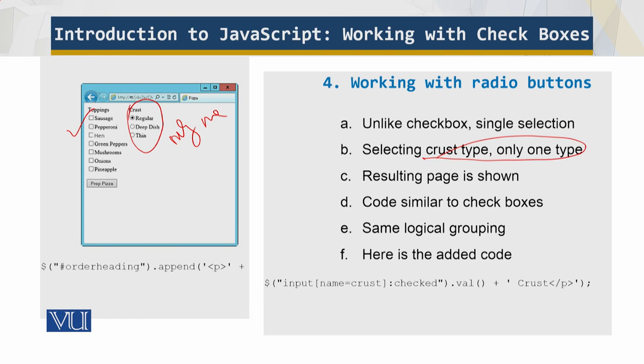The code that processes the radio buttons is similar to the code you saw that processes the check boxes, so I'm not showing this code. The main difference is the radio buttons all share the same name and logical grouping, meaning that they are grouped together and only one can be checked at a time. The code for processing the radio button is added to the prepza function and it looks like this.